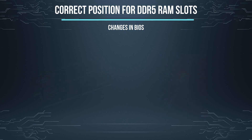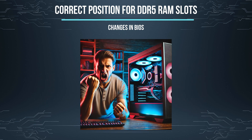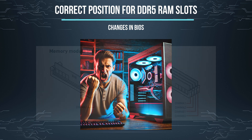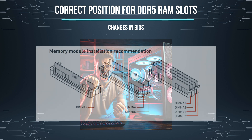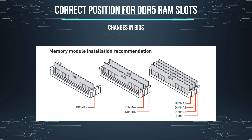The first problem I encountered was that the system wouldn't start at all. This was because the DDR RAM was not installed in the correct order. Always ensure that your RAM sticks are installed in the correct slots. With the AM4 socket this issue was less critical and the system would still start, but with the AM5 socket the RAM must be installed correctly.